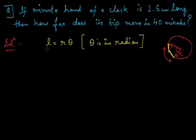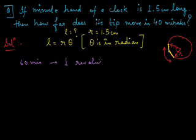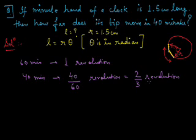L is what we need to find. R equals 1.5 cm is given. To calculate theta: in 60 minutes, the minute hand completes one full revolution. So in 40 minutes, it completes 40 by 60 of a revolution, which simplifies to 2 by 3 of a revolution.